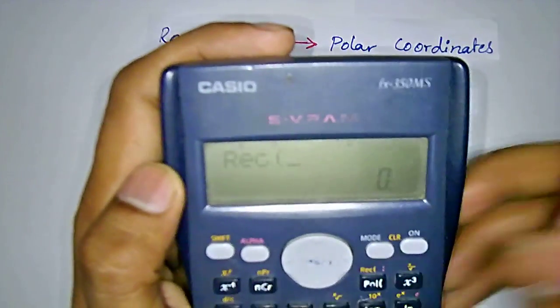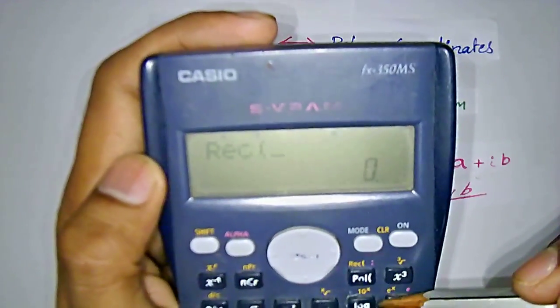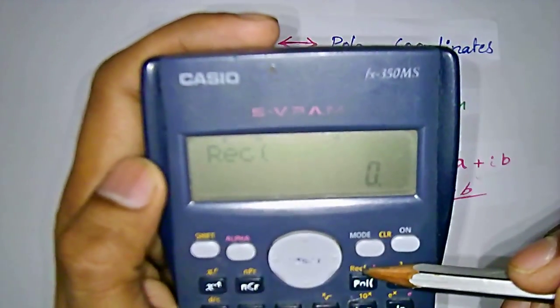To put rectangular, that is REC, by pressing shift and polar - that is this value, rectangular value.